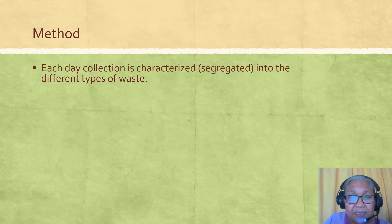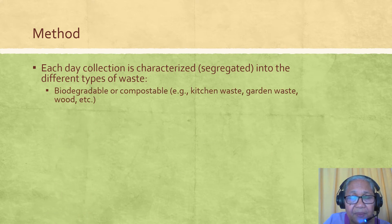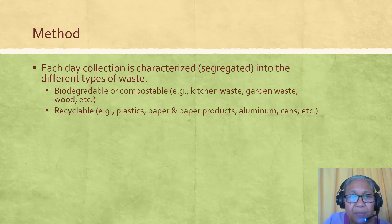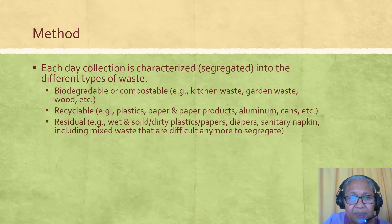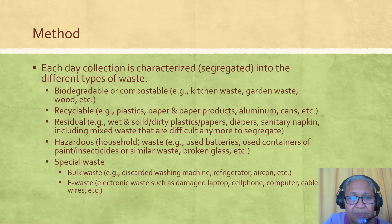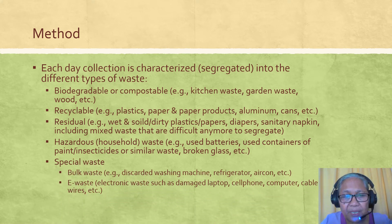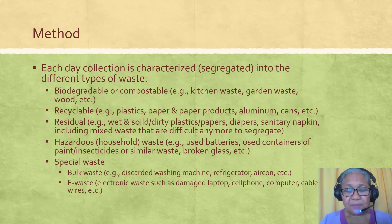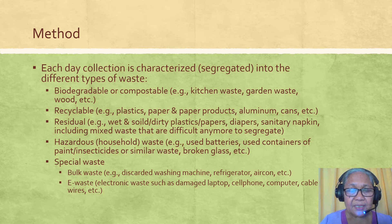Each day's collection is characterized or segregated into the different types of waste: biodegradable or compostable, recyclable, residual, hazardous, or special waste. Special waste has two kinds — bulk waste such as discarded washing machines, refrigerators, and air conditioning units; and e-waste or electronic waste, examples of which are damaged laptops, cellular phones, computers, cable wires, and similar materials.